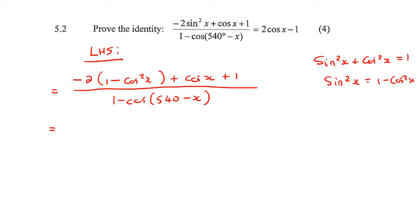Now I'll multiply the 2 in, giving us -2 + 2cos²x + cos x + 1. At the bottom, when you get a number bigger than 360° or negative, you minus or add 360° depending on what you need. Here we're going to minus 360°.